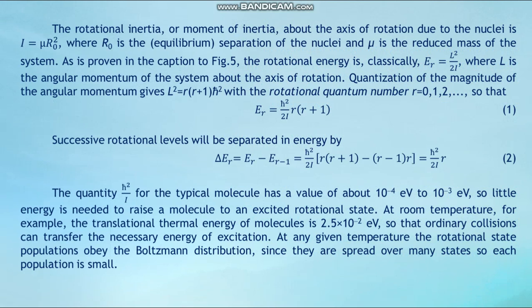The rotation energy is classically E_R = L²/(2I), where L is the angular momentum of the system about the axis of rotation. Quantization of the magnitude of the angular momentum gives L² = R(R+1)ℏ², with the rotational quantum number R = 0, 1, 2, etc. So that E_R = ℏ²/(2I) · R(R+1)  (Formula 1). Successive rotational levels will be separated in energy by Formula 2.